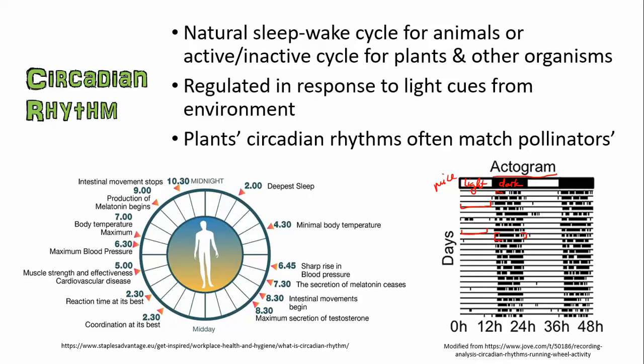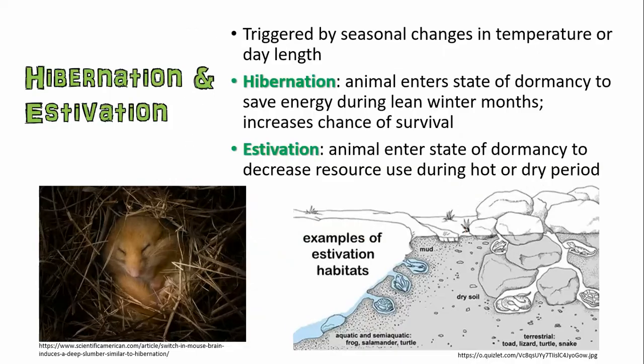Humans have a circadian rhythm as well. Some of these body conditions will change — for example, there's a time during which you have a minimal body temperature, where if you were measuring someone's temperature constantly, that would be the lowest, and another time where their body temperature would be at its maximum. Just be aware that you'll see diagrams like this potentially or some sort of question involving it.